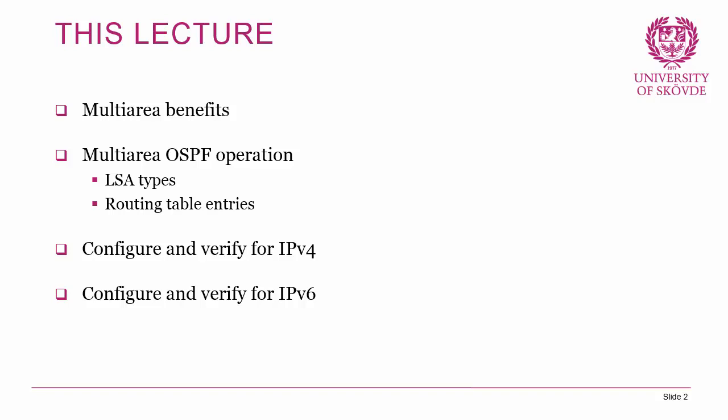For this lecture, we're going to look at Multi-Area OSPF. We'll start by looking at the issues that you can have in single area and the benefits that Multi-Area OSPF can bring. Then we'll look at the operation of Multi-Area OSPF — specifically the different types of link state advertisements and how the routing table would look. Then we're going to configure and verify for IPv4, and there will be a practical for IPv4 as well.